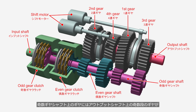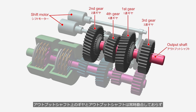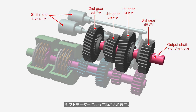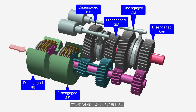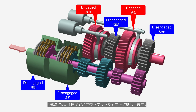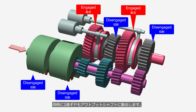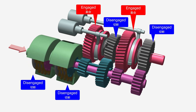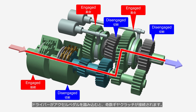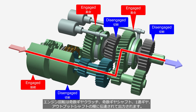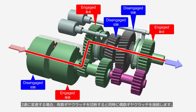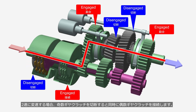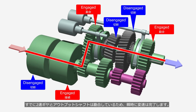The gears on the odd gear shaft mesh with the odd number gears on the output shaft, while the gears on the even gear shaft mesh with the even number gears on the output shaft. The gears on the output shaft are not constantly engaged; they are engaged by the shift motor only during the gear is selected. In neutral, the gears are not engaged with the output shaft, so the engine rotation is not transmitted. In first gear, the first gear engages with the output shaft, and at the same time, the second gear also engages with the output shaft. When the driver depresses the accelerator pedal, the odd gear clutch engages, and the engine rotation is transmitted through the odd gear clutch, the odd gear shaft, the first gear, and then the output shaft. When shifting to second gear, the odd gear clutch is disengaged while the even gear clutch is engaged simultaneously. Since the second gear and the output shaft are already engaged, the shift is completed instantly.